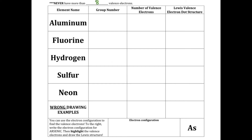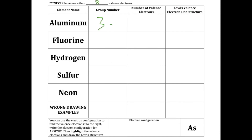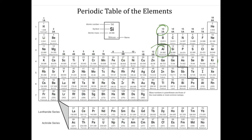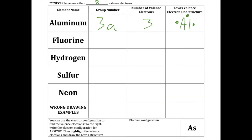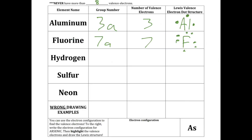Aluminum is in the 3A column, so it's going to have 3 valence electrons, and the Lewis dot structure will have 3 dots. Fluorine is right here — it's in the 7A, so it will have 7 valence electrons: 1, 2, 3, 4, 5, 6, 7. Hydrogen is in the 1A, so it's going to have 1 valence electron.